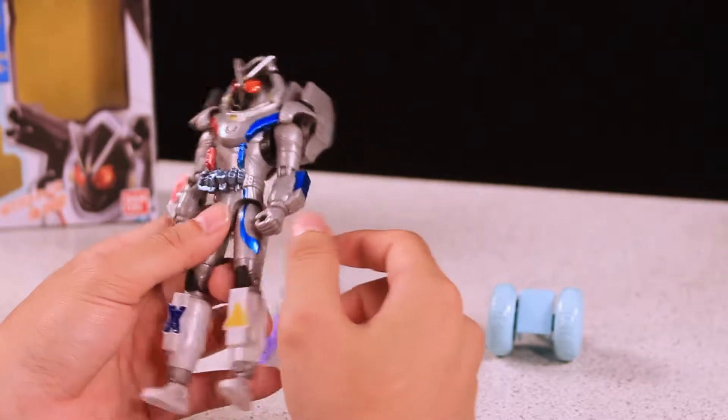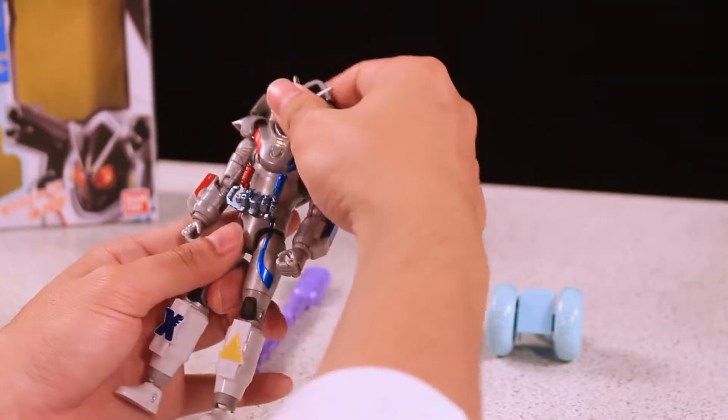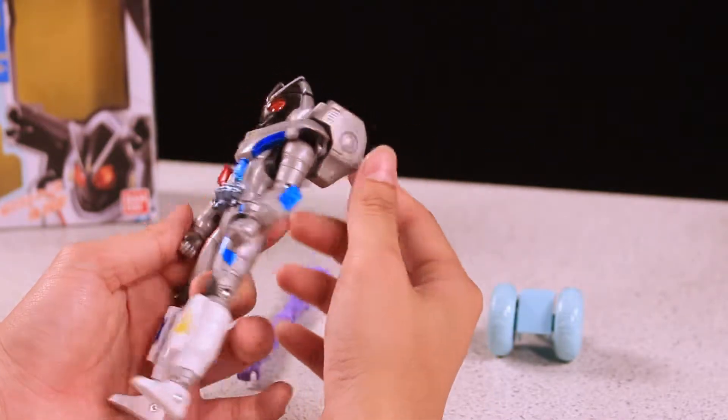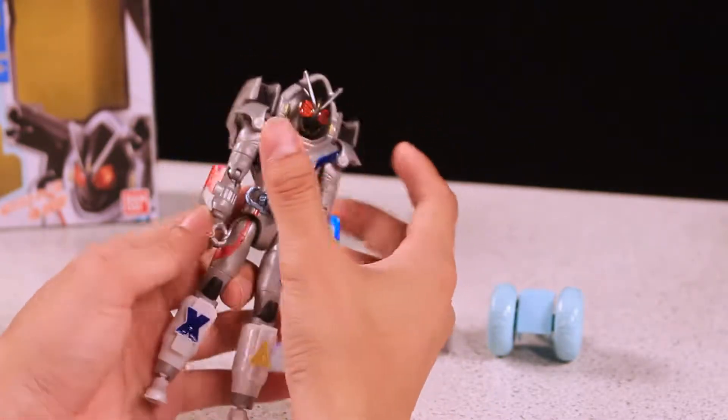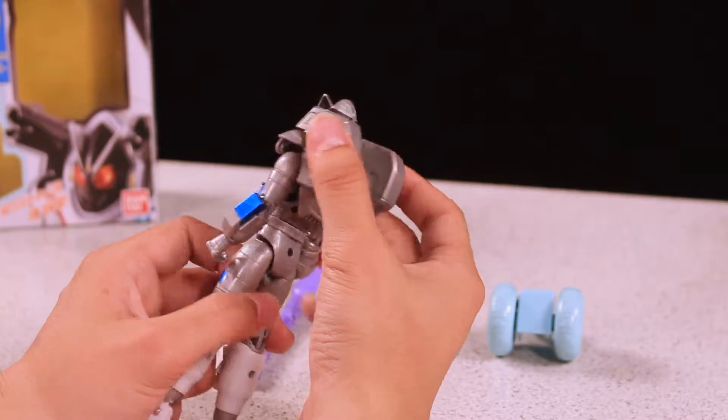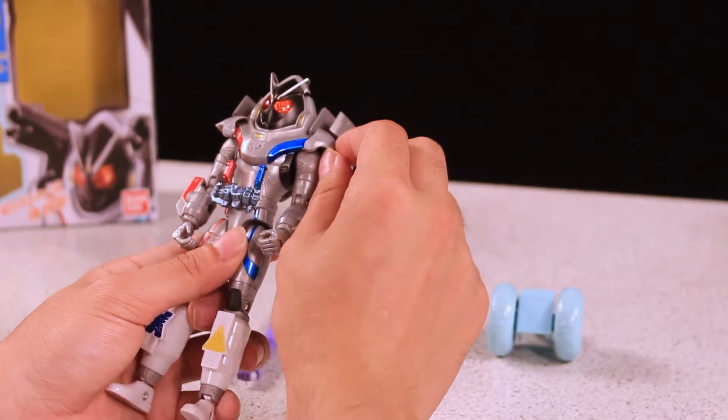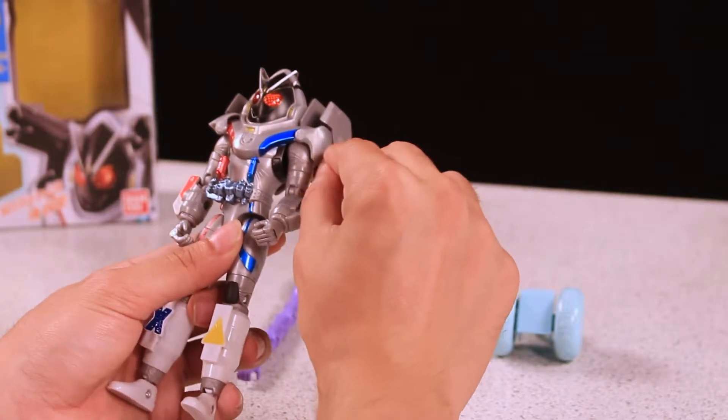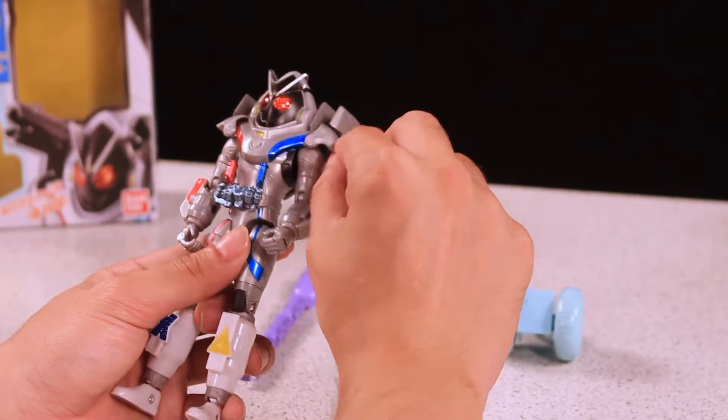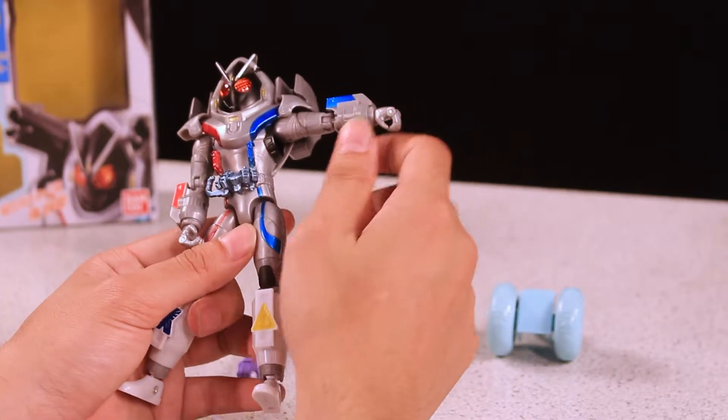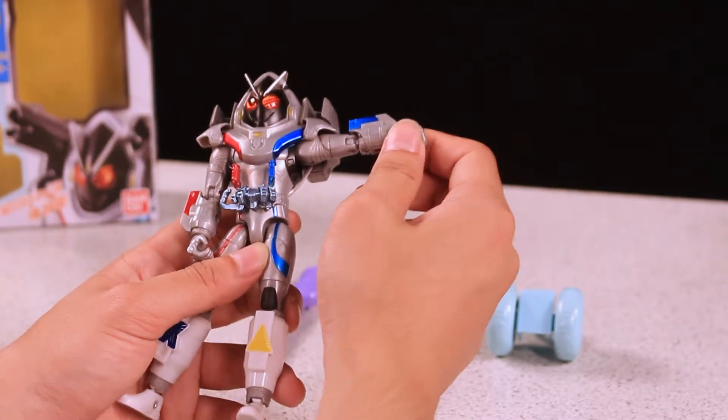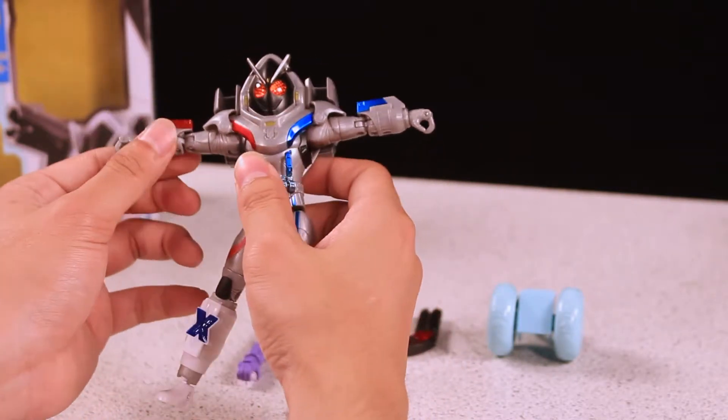For articulation, unfortunately we don't have head articulation because of the design and the bulky look for the shoulder pad. For the hands, we have a floating piece of shoulder pad, so it will flow with the movement of the hand. You can actually bring up the hand this far from the side, pretty far, pretty good.